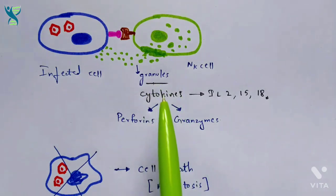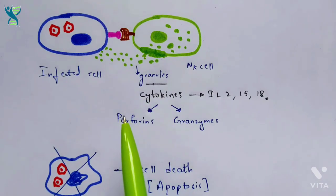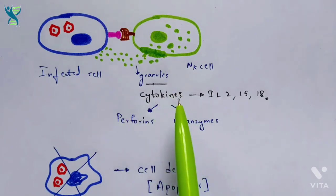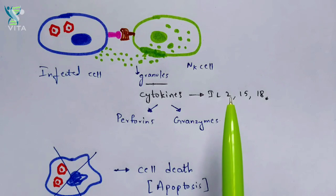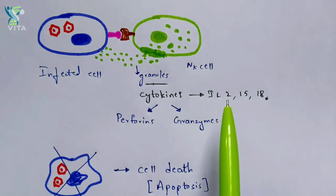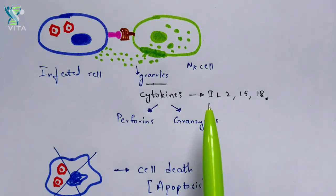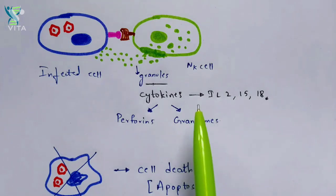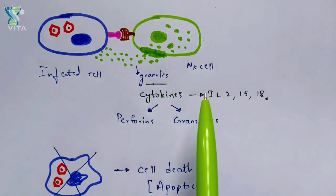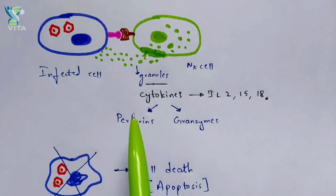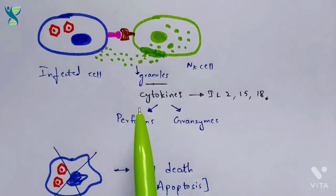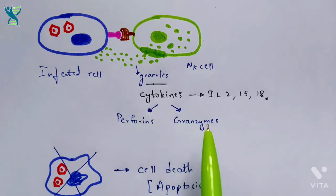These granules are cytokines — specifically interleukins, which are a classification of cytokines. The interleukins responsible are interleukin-2, interleukin-15, and interleukin-18. More importantly, remember perforins and granzymes, as these play a major and vital role in killing the infected cell. Perforins are cytokines that help break the cell membrane of the infected cell, whereas granzymes help to kill the infected cell directly.